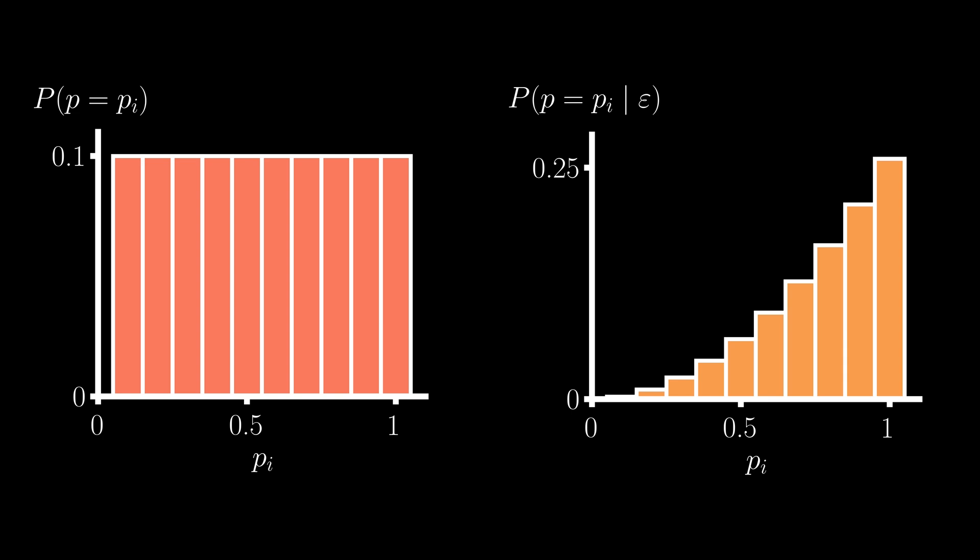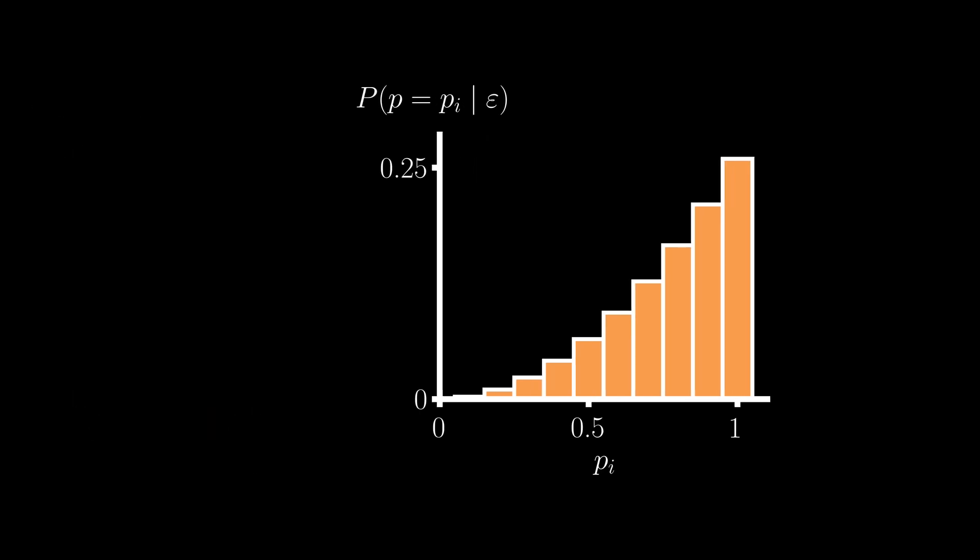Now, if we want to report a single value for p that we believe is our best estimate of that parameter, which we can call an estimator, a very common one in Bayesian statistics is the parameter's expected value or mean.